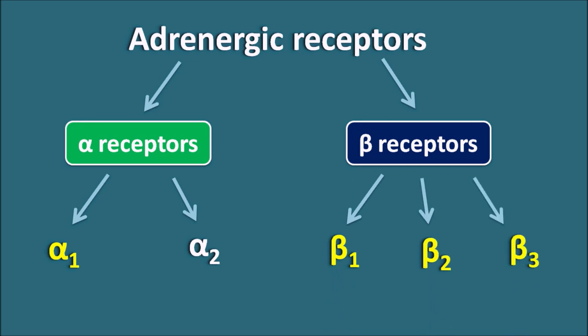Today in this video let us see what is the function of these alpha and beta receptors, where they are located, and how they are going to produce the physiological actions. All these adrenergic receptors are G-protein coupled receptors, and when they are activated they are going to elevate one of the secondary messenger systems which produce the physiological actions. Let us see what type of G-protein coupled receptors are associated with each type of adrenergic receptor.